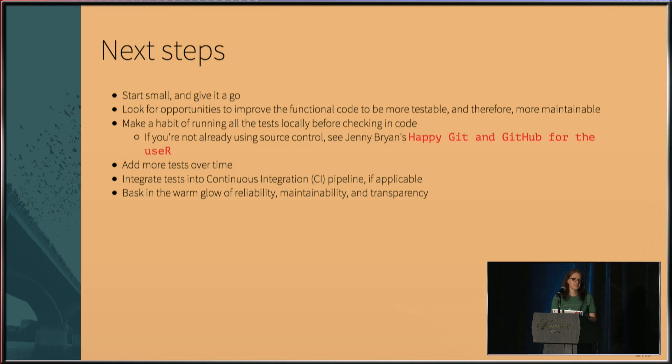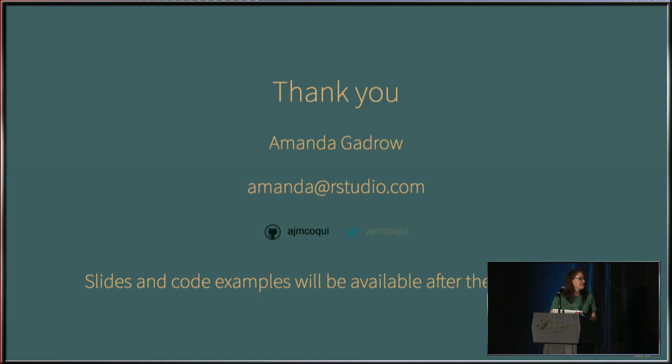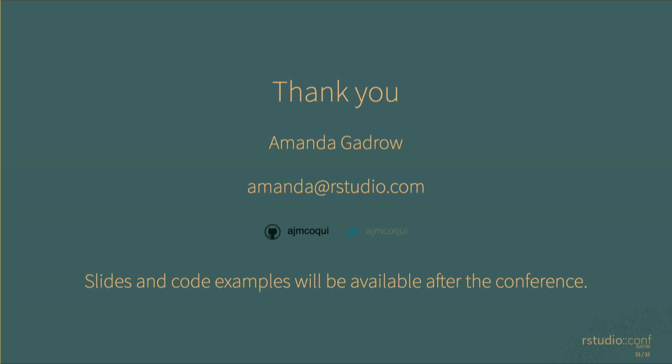Next steps. Start small. Give it a go. There's no reason not to do this. It's three steps. You don't have to do everything in the world right at the very beginning. You can start with your major functions and move on from there. Look for opportunities to improve the functional code to be more testable and therefore maintainable. Your future self will thank you. Trust me. I've been there. So, if you are using source control, check in your tests as well as your functional code, so that it always stays in sync with what you're actually building. And if you have a continuous integration system like Jenkins or Travis, if you check it in with your code, there are pretty easy ways to plug it in and have it run those tests every single time, have it run the tests for you as part of your regular build integration system for your packages. And then you can bask in the warm glow of reliability and maintainability because your tests are telling you whether or not you've broken something and you don't have to guess and you don't have to wait for your users to find it. Thank you very much. If you want to have any questions about this or anything else, feel free to email me. I'll be around in the pro lounge as well later. And slides and code examples will be available after the conference. Thank you.